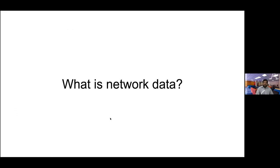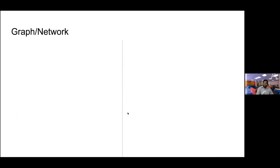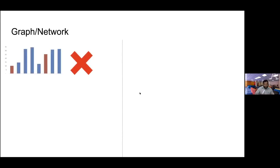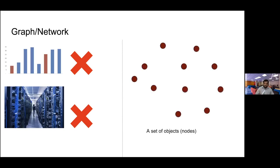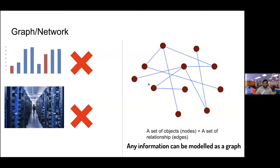So let's get started. First question: what is a graph? What is network data? When I ask this question, some people say it's a chart — no. Others say it's a computer network — also no. The mathematical definition of a graph or network — the terms are interchangeable — is simple: you have a set of objects called nodes or vertices, and a set of edges representing relationships or connections between those objects. It's a complex data structure because our human brains cannot easily process these node-to-node connections.